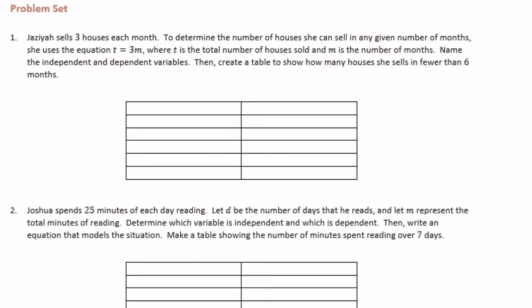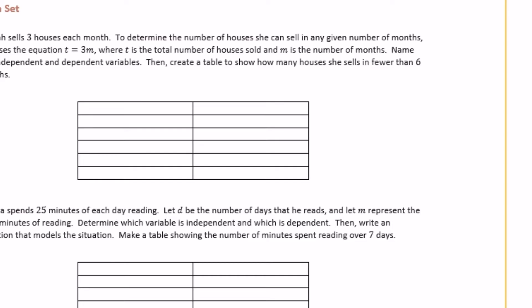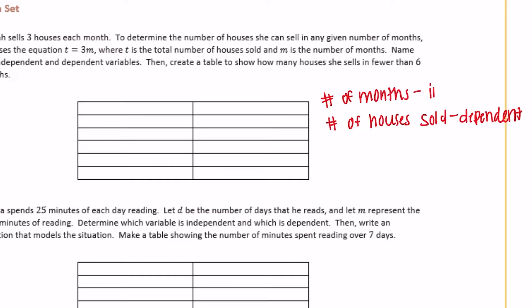She sells three houses each month, so the number of houses she sells is going to be dependent upon the number of months that she's selling houses. So the number of houses sold is the dependent variable, and it's dependent on the number of months. We're going to have number of months (m) and number of houses sold.